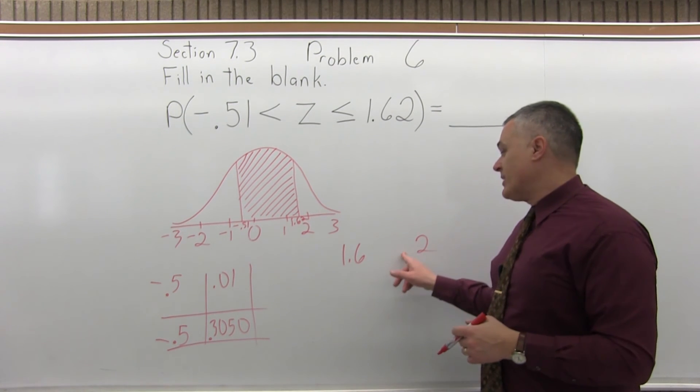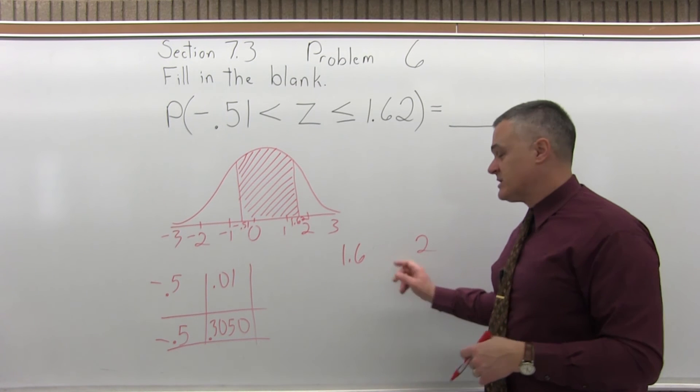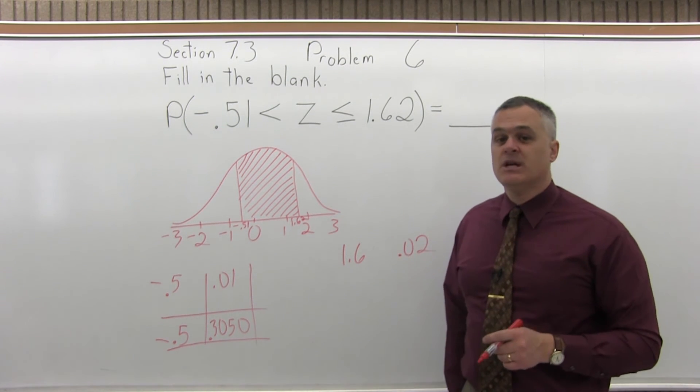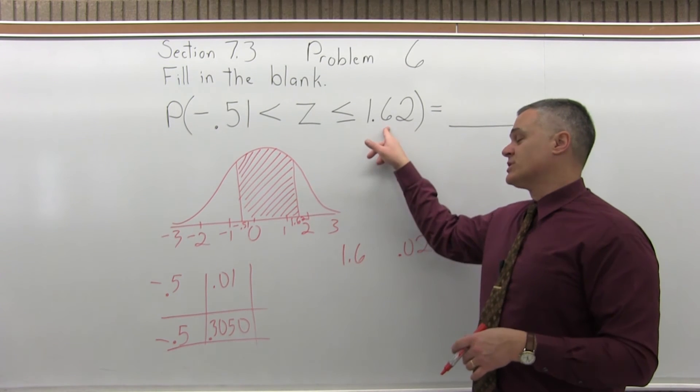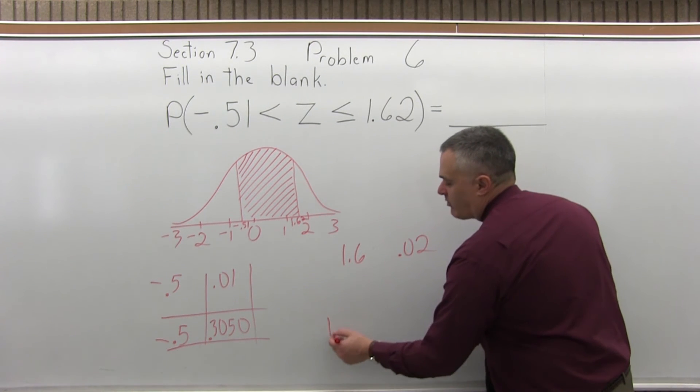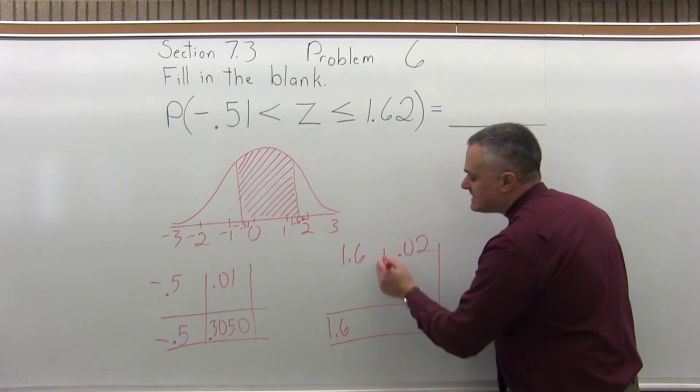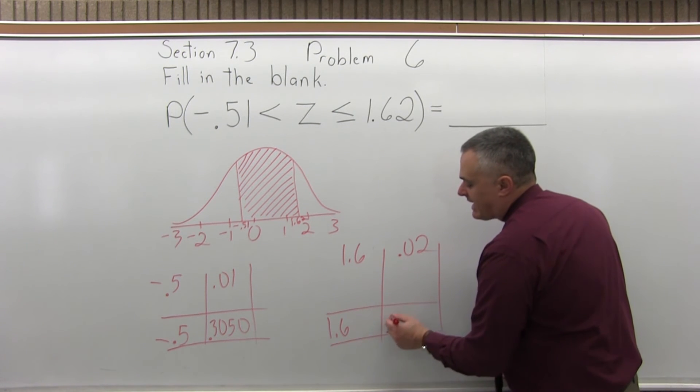After that what you want to do is write a 0.0 in front of the rightmost digit that you pulled off. So instead of 2, it's 0.02. Now you want to go to the positive portion of the chart, look in the 1.6 row, see where that will intersect with the 0.02 column. And it intersects at 0.9474.